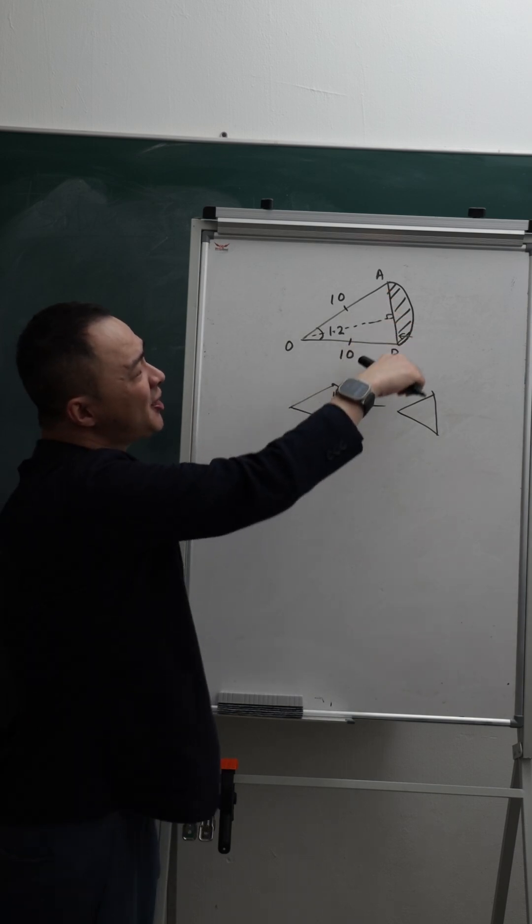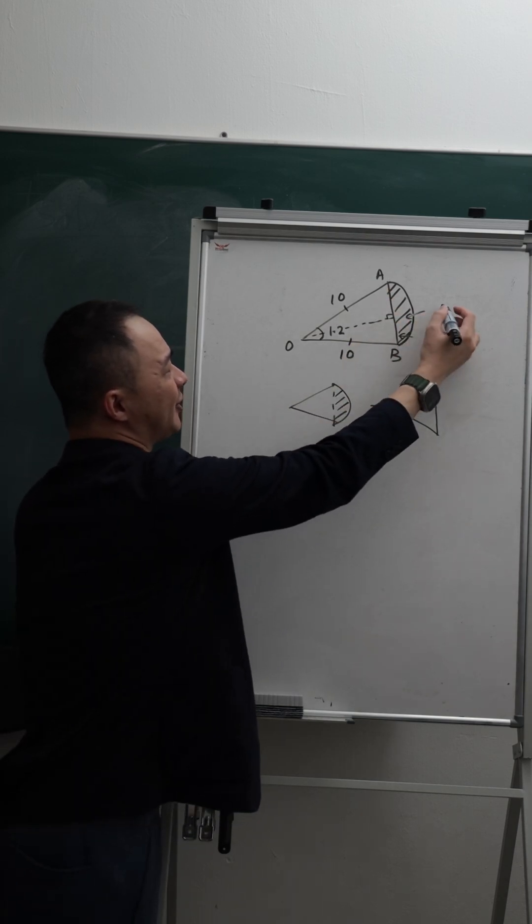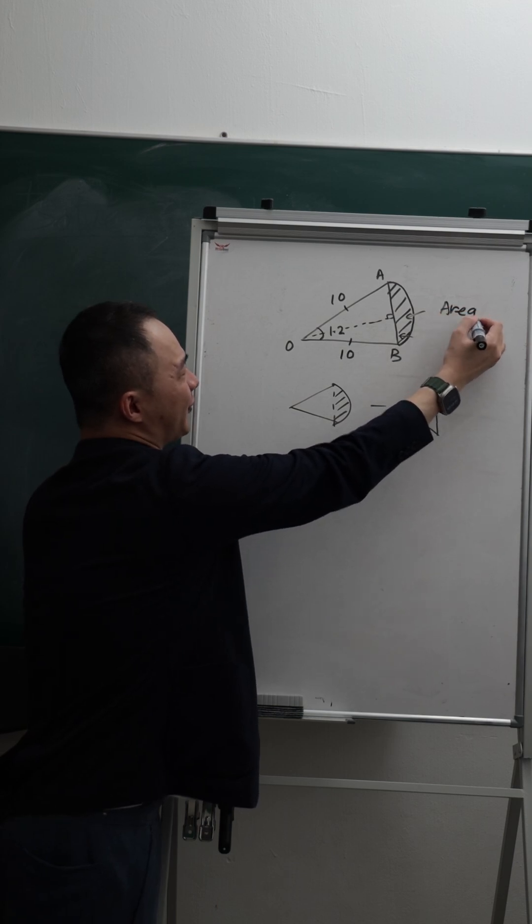But if you see carefully, this shaded region has a name. The name is called area of segment.